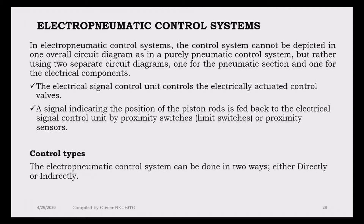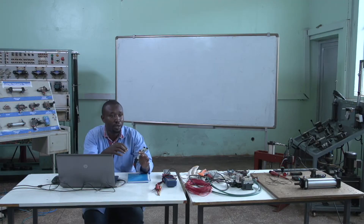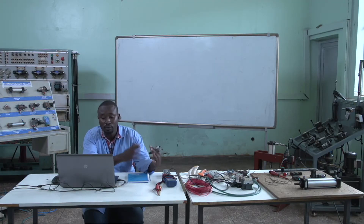When we say electro-pneumatics we just mean we have a pneumatic side and we have an electrical side. With electro-pneumatics we always need to have two separate circuits when drawing: one for the electrical side and another one for the pneumatic side. We will have some components from the electrical system and some components for the pneumatic system.